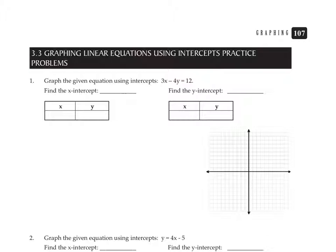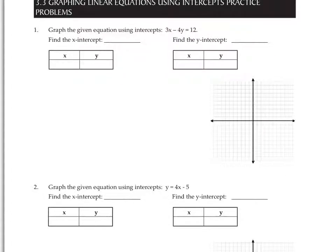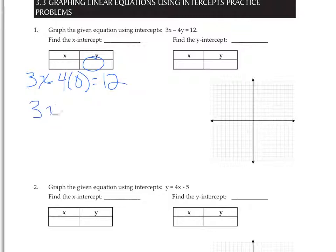We're going to work on this first one using the given equation 3x minus 4y equals 12. We're going to first find the x-intercept. So we substitute zero for y, replacing y with zero: 3x minus 4 times 0 equals 12. 4 times 0 is 0, so 3x equals 12. Divide both sides by 3 and we get x equals 4.